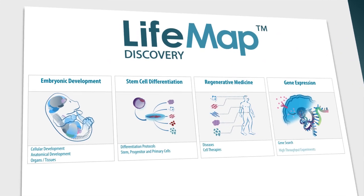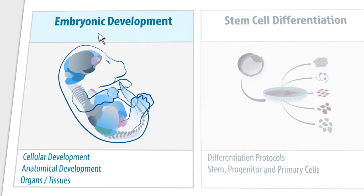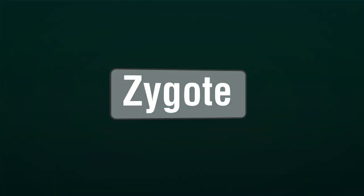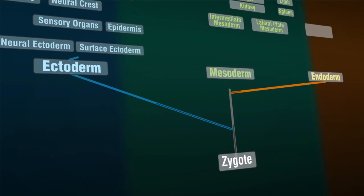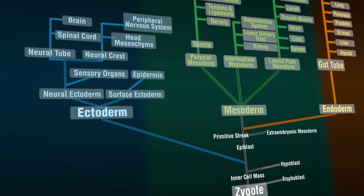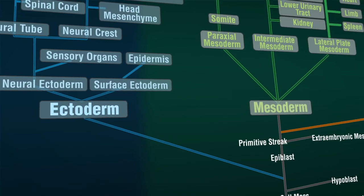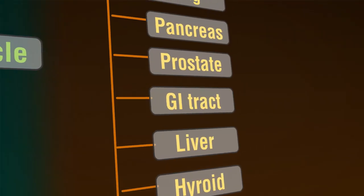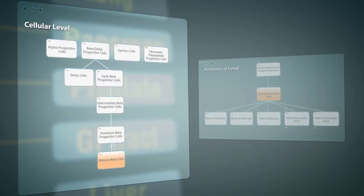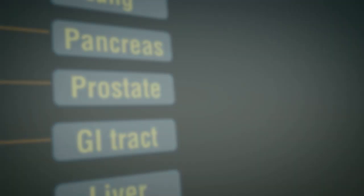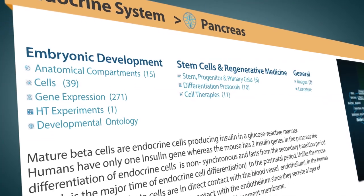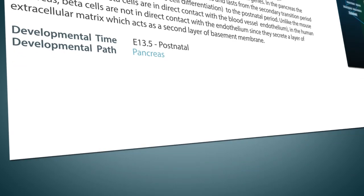Let's explore our embryonic development module. Here we describe mammalian development from the zygote through the three germ layers to fully developed organs and tissues, including temporal, spatial, cellular, and anatomical data. With the interactive ontology tree, you can navigate through different tissues, zoom into the anatomical and cellular levels, and explore detailed descriptions including morphology, markers, and anatomical context.